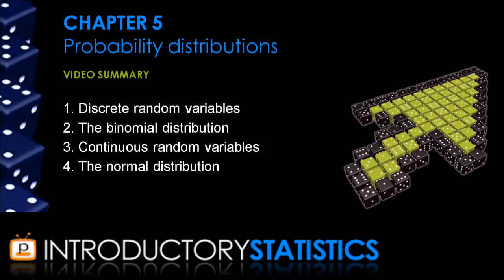Hi again, I'm Shaun Thompson, and welcome to the fifth summary in the Pedisco statistics video series. This summary is about probability distributions. In particular, we'll be going over discrete random variables, the binomial distribution, continuous random variables, and the normal distribution.